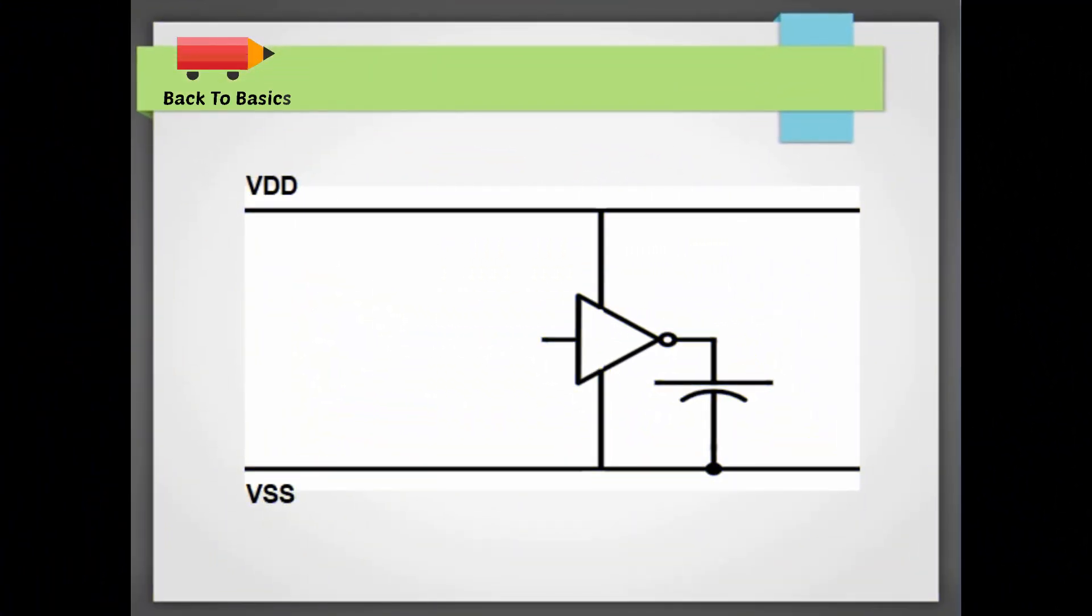Let's try to understand the functionality of decap cells through the power requirements of this inverter which is sitting somewhere inside a chip. Now this inverter will get its power from these power and ground rails.